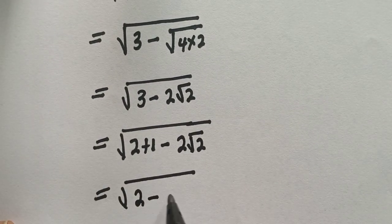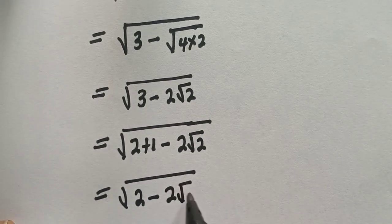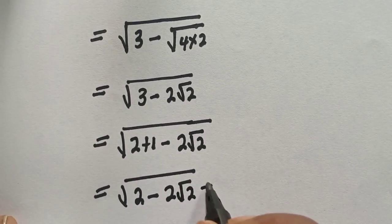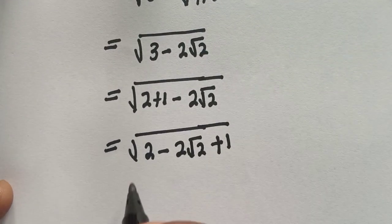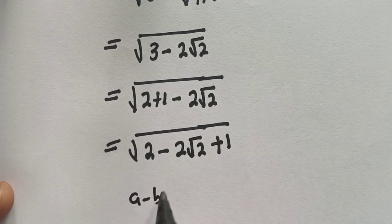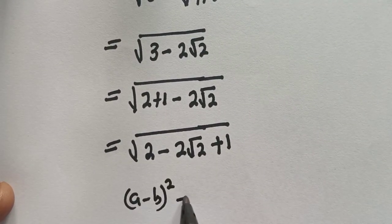2 minus 2 root 2 plus 1. And remember this: if you have a minus b square, this is...